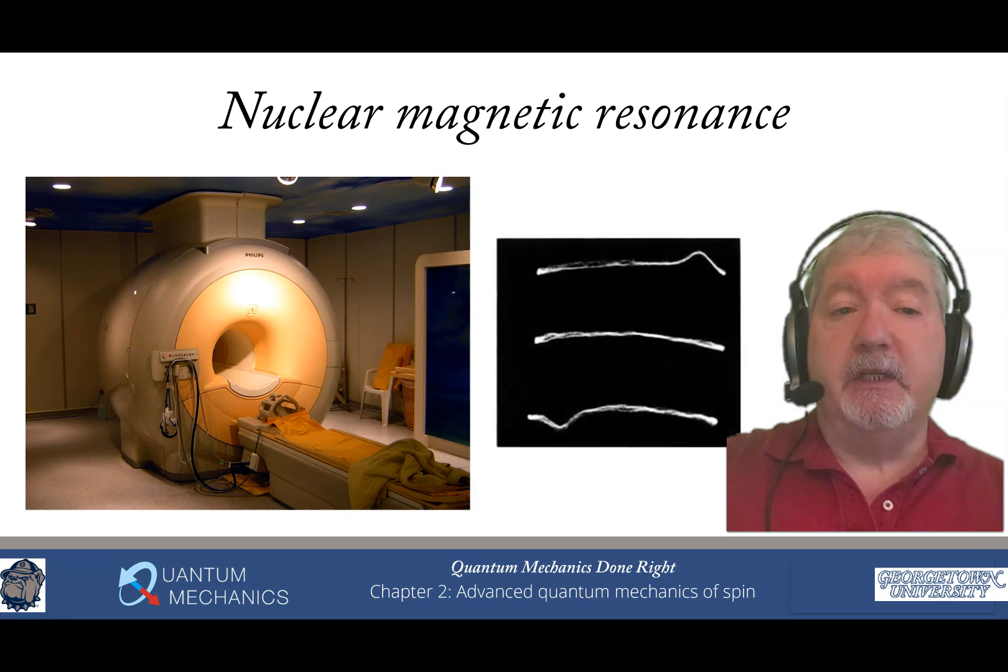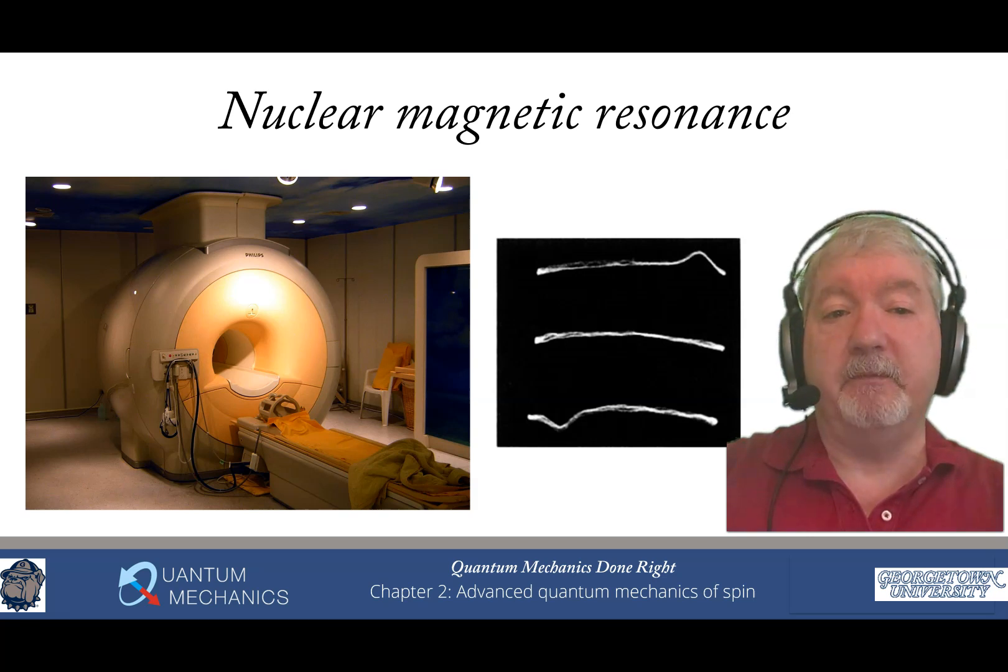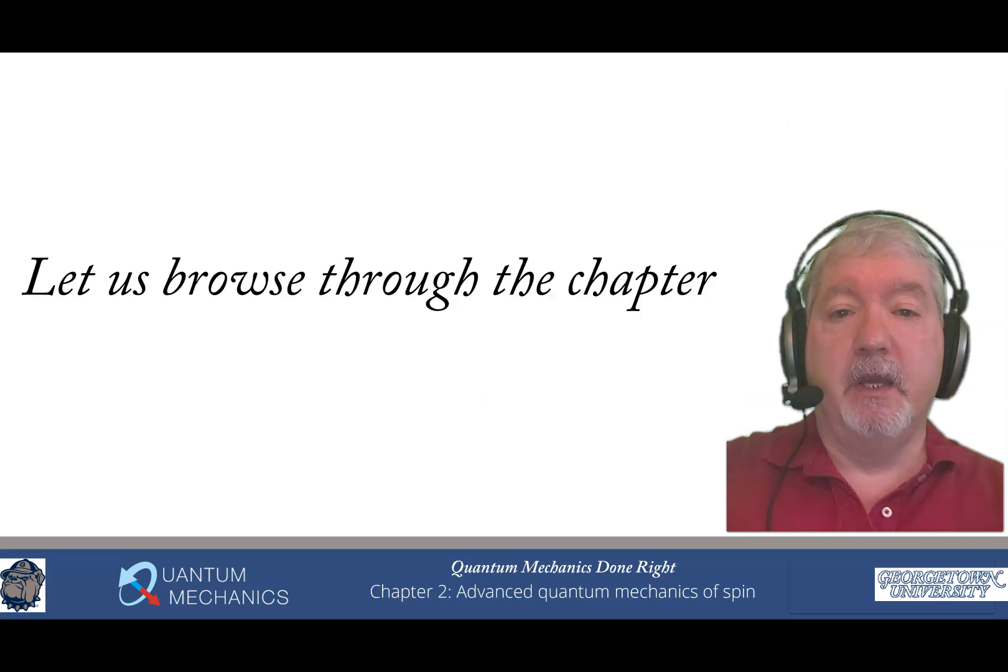In addition, in this chapter we talk about applications such as nuclear magnetic resonance. You can see an MRI machine on the left panel, and the experimental data on the right panel is actually one of the first nuclear magnetic resonance images ever taken. It is looking at the spectra of paraffin.